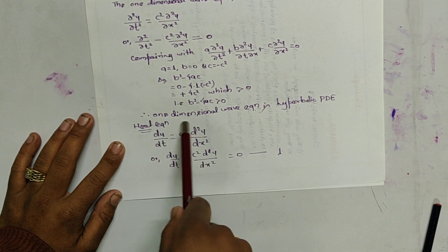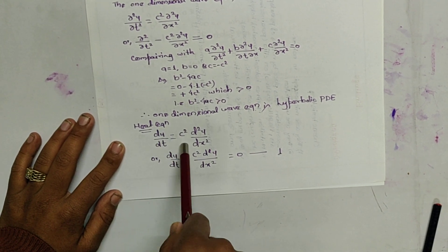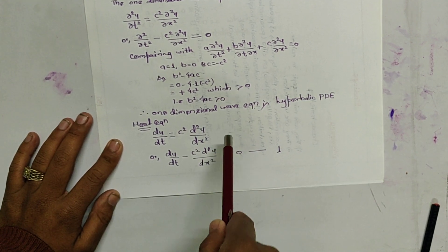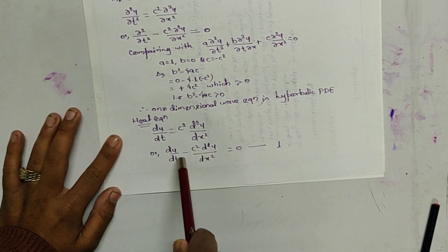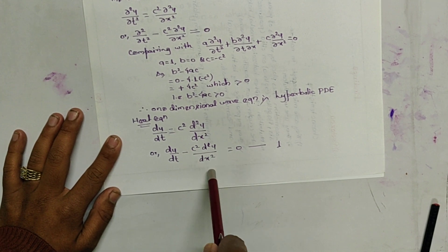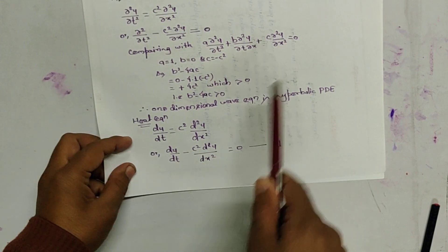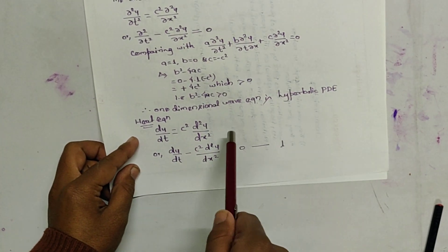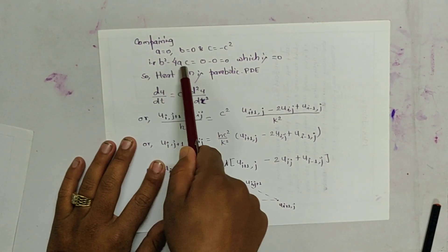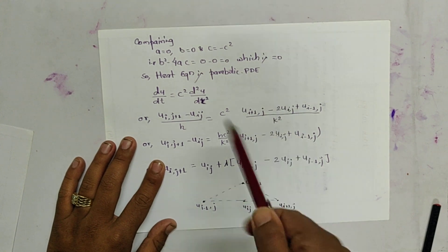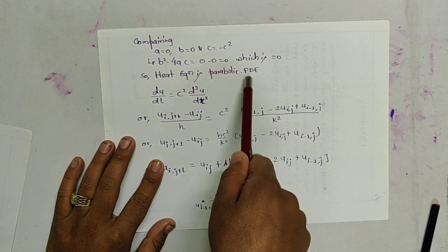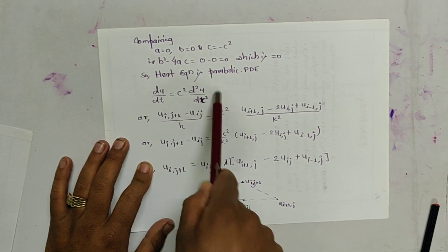Now let us consider the heat equation. The heat equation is du/dt = c² del²u/dx². Moving this part to the left-hand side: du/dt - c² del²u/dx² = 0. Comparing with the standard form, we get A = 0, B = 0, and C = -c². So b² - 4ac = 0, which means it is a parabolic partial differential equation.